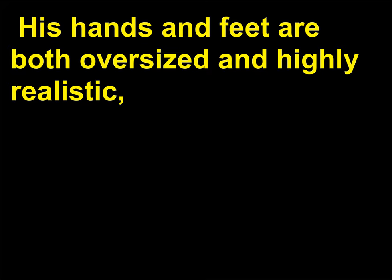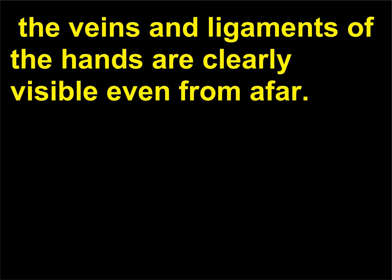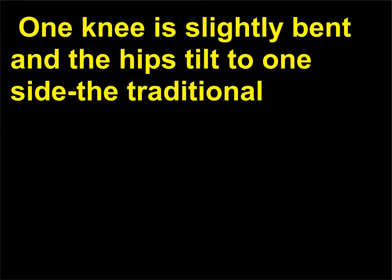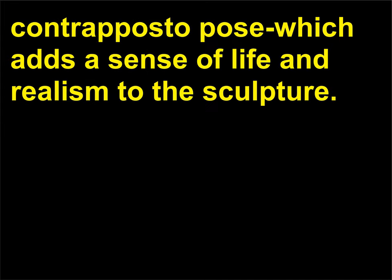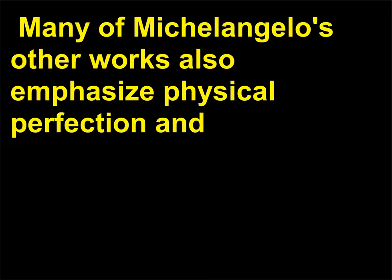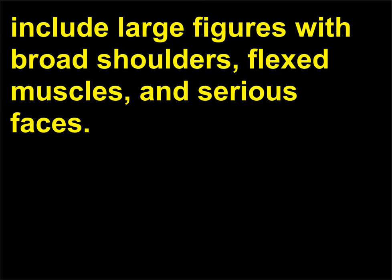His hands and feet are both oversized and highly realistic. The veins and ligaments of the hands are clearly visible even from afar. One knee is slightly bent and the hips tilt to one side — the traditional contrapposto pose — which adds a sense of life and realism to the sculpture. Many of Michelangelo's other works also emphasize physical perfection and include large figures with broad shoulders, flexed muscles, and serious faces.